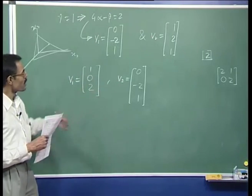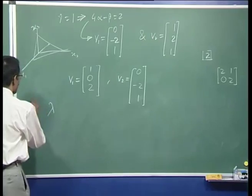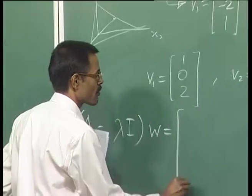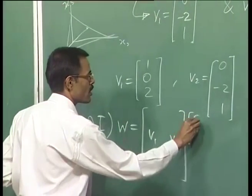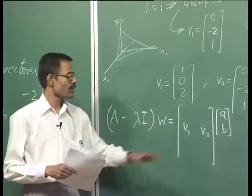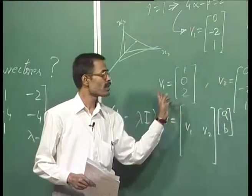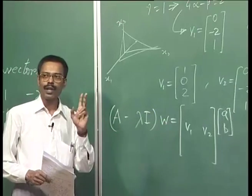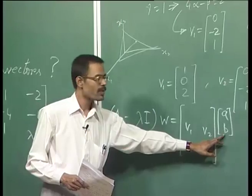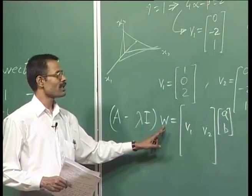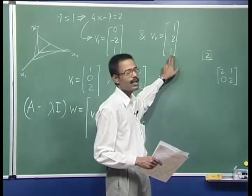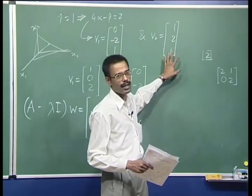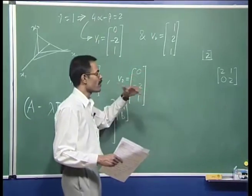I leave this for you as an exercise. You want to solve for the generalized eigenvector from A*V1 + B*V2, a linear combination of these two eigenvectors. If you try to do that, you will find that only for a specific combination of values of A and B will a generalized eigenvector be admitted. That turns out to give you a specific eigenvector, which must come in the basis matrix for the Jordan canonical form. I leave this for you as an exercise.